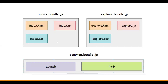This is where code splitting comes into the picture. With the help of code splitting, we will remove the common dependencies — lodash and dayjs — from both bundles and keep them as a separate bundle. That means the index bundle will contain only index-specific things, the explore bundle will contain only explore-specific things, and finally our common bundle will contain the shared code. This way we can implement code splitting and optimize our bundle further.